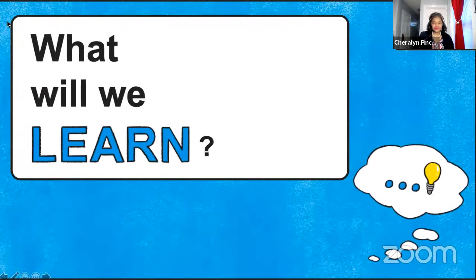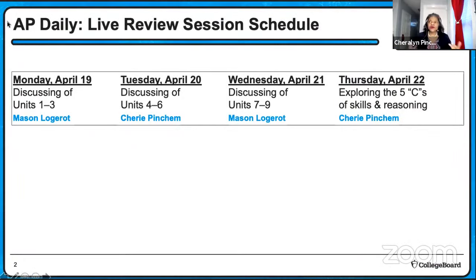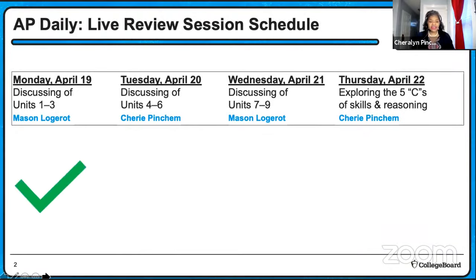Before we get into what we're doing today, let me do a quick overview of what we've done over the past week. Last week, we started with a review of Units 1 through 3, done with Mr. Logero. Then on Tuesday we reviewed Units 4 through 6, and then Units 7 through 9. On Thursday we explored the five C's, which were skills and reasoning. If you weren't with us last week, don't worry — those videos are available on demand.